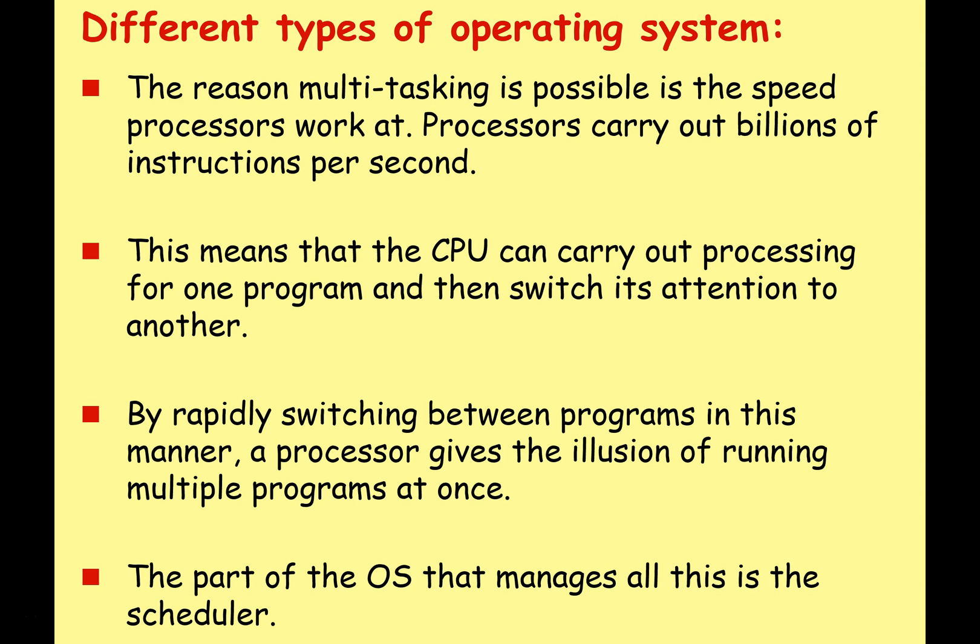The reason multitasking is possible is the speed that modern processors work at. Processors can carry out billions of instructions per second. This means that the CPU can carry out processing for one program and then switch attention to another program. By switching rapidly between programs in this manner, a processor gives the illusion of running multiple programs at once. The part of the operating system that manages all this is the scheduler, and we'll look at scheduling in more detail in a future lesson.